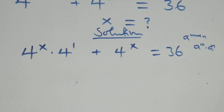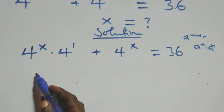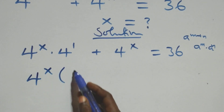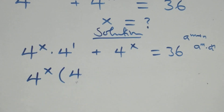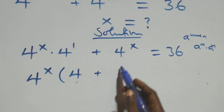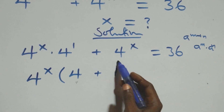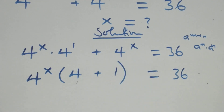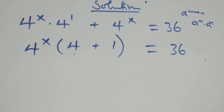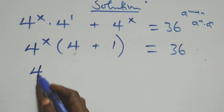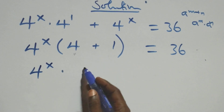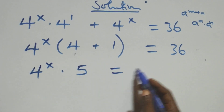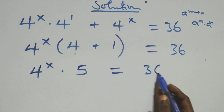Here we have 4 raised to power x common. We factor it out and we have 4 raised to power x into bracket. We have 4 raised to power 1, which is 4, plus 1, in bracket, equals 36. This becomes 4 raised to power x times 4 plus 1, that's 5, equals 36.